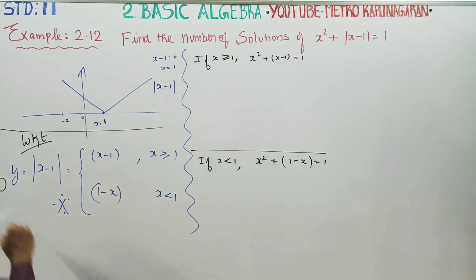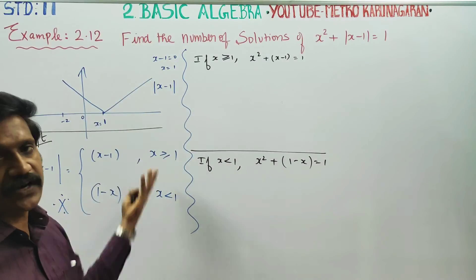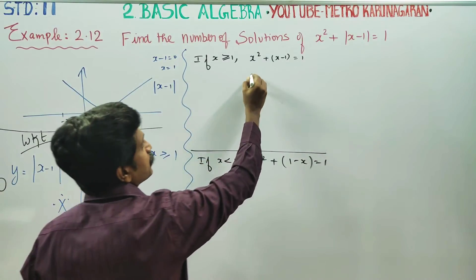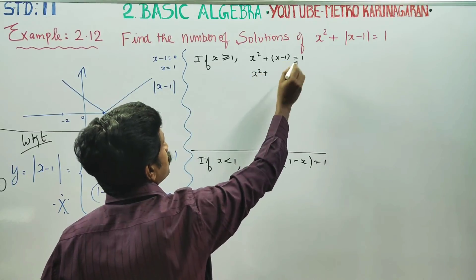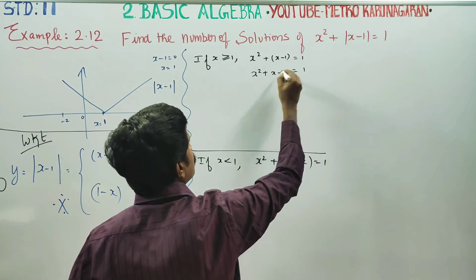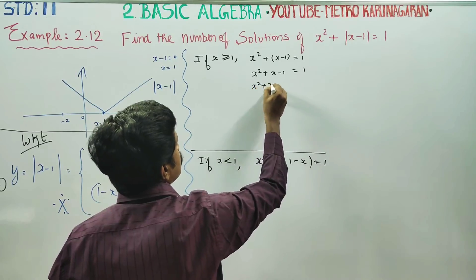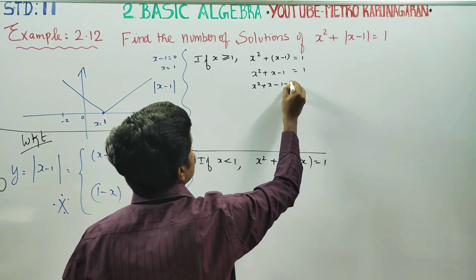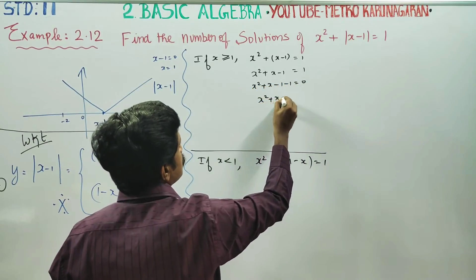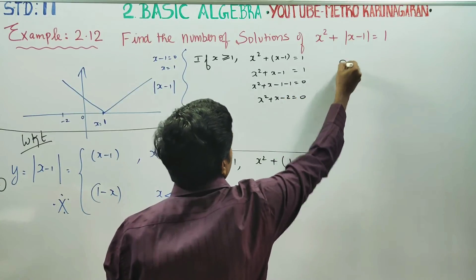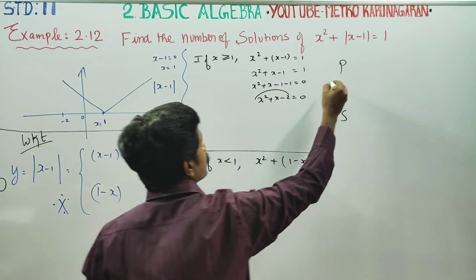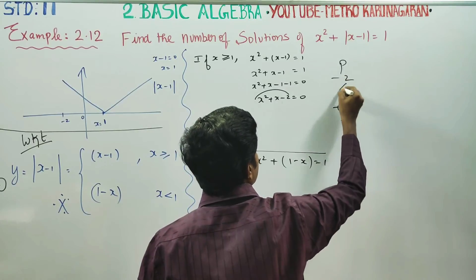Write this step. From Case 1: x² plus (x-1) equals 1. Expanding: x² plus x minus 1 minus 1 equals 0, giving x² plus x minus 2 equals 0. Go for product and sum method. The product is minus 2 and the sum is 1.